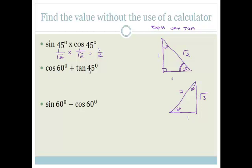Let's do: cos 60 plus tan 45. Cos of 60 — looking at the 60-30 triangle — cos is adjacent over hypotenuse, so it's 1 over 2. Tan of 45 is opposite over adjacent, which is 1 over 1, so the total is 1 and a half, or if you prefer, 3 over 2.